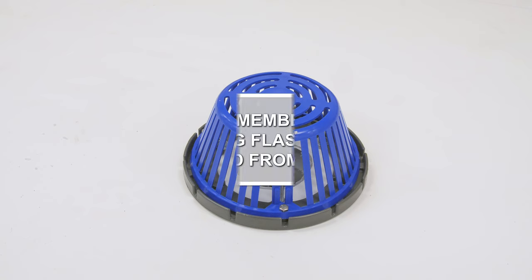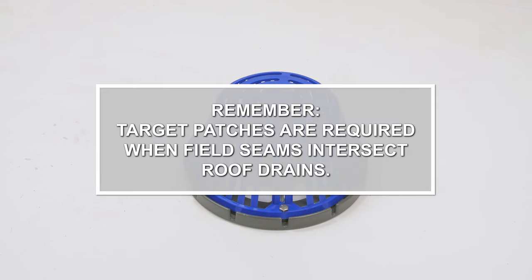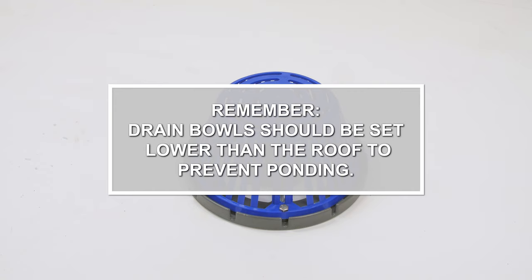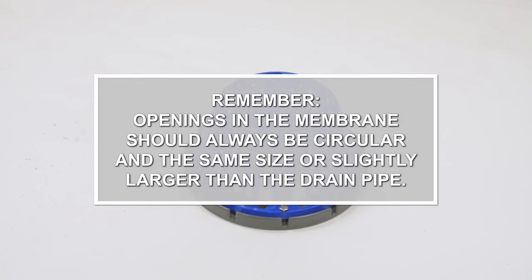Things to remember. All existing flashing must be removed from the drain. Target patches are required when field seams intersect roof drains. Drain bowls should be set lower than the roof to prevent ponding. Openings in the membrane should always be circular, and the same size or slightly larger than the drain pipe.